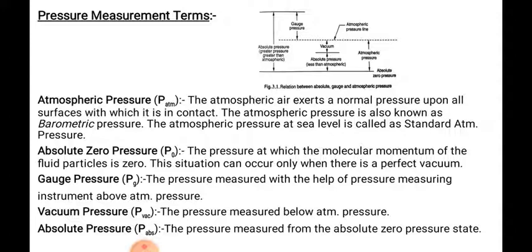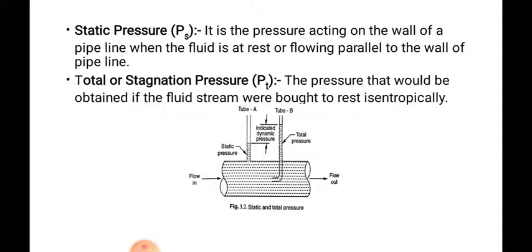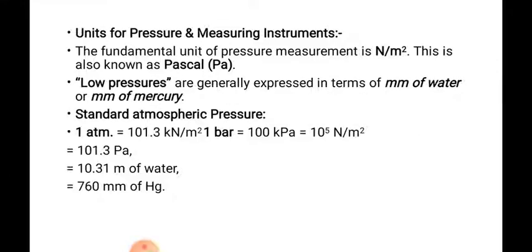Static pressure is the pressure acting on the walls of the pipeline when the fluid is at rest or flowing parallel to the wall of the pipeline. Whatever pressure is exerted by the flowing fluid on the pipeline is the static pressure. Total or stagnation pressure is the pressure that would be obtained if the fluid stream were brought to rest isentropically — we have already studied isentropic processes in engineering thermodynamics.